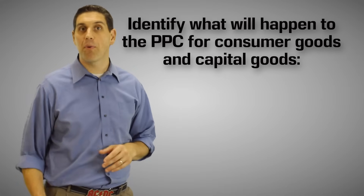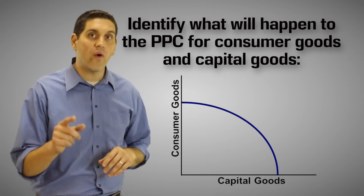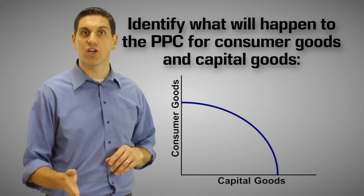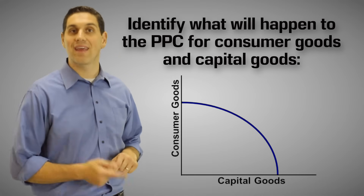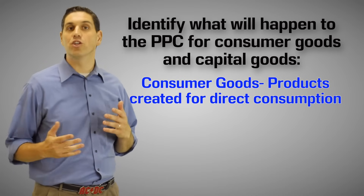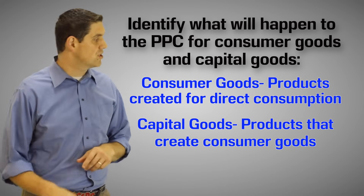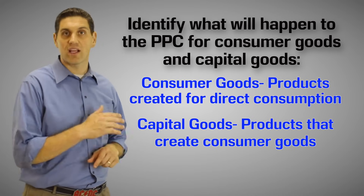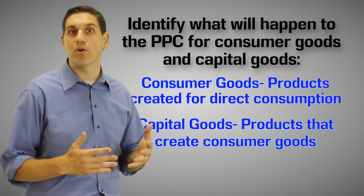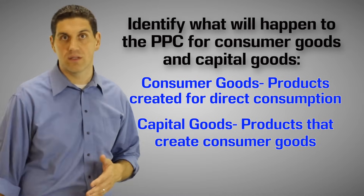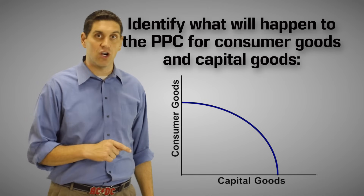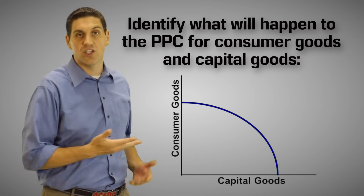Now let's get back to shifting the production possibilities curve. I'm going to give you four examples and I want you to figure out what happens to the production possibilities curve for consumer goods and capital goods. A quick reminder: consumer goods are made for direct consumption, like pizza. Capital goods are made for indirect consumption, like an oven. So capital goods are our tools and machinery to produce consumer goods. For each one of these scenarios, draw a separate production possibilities curve and show what happens in each situation.